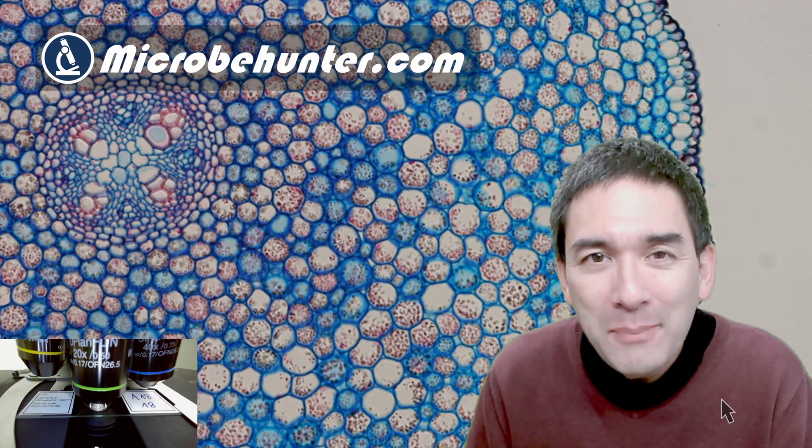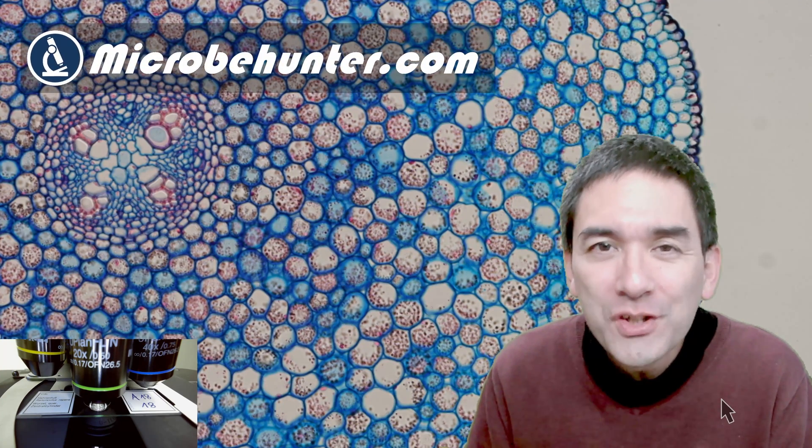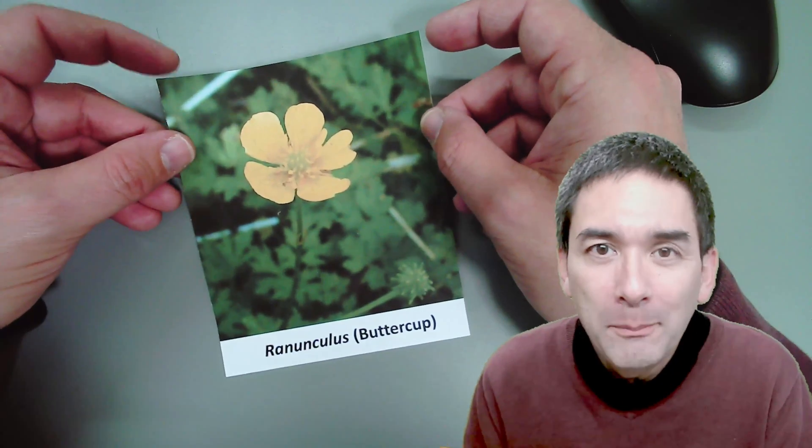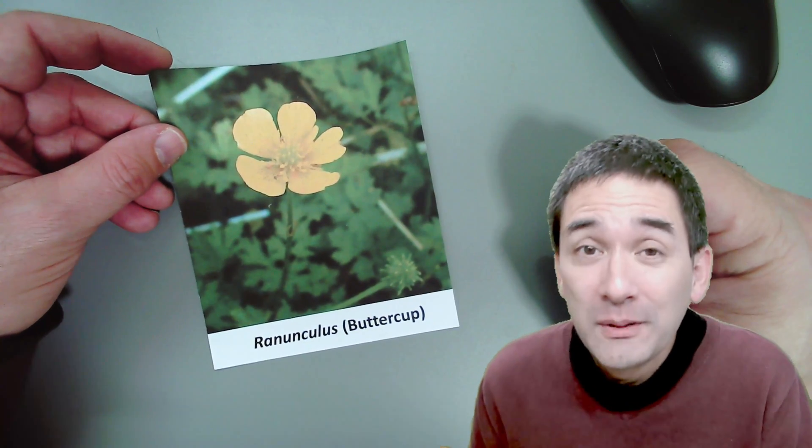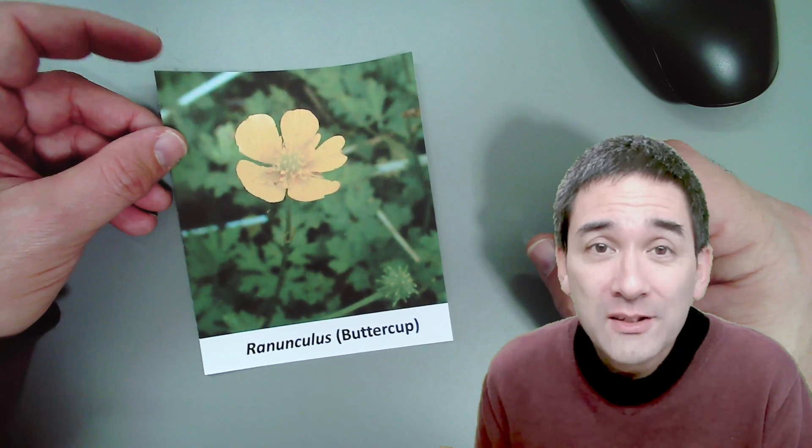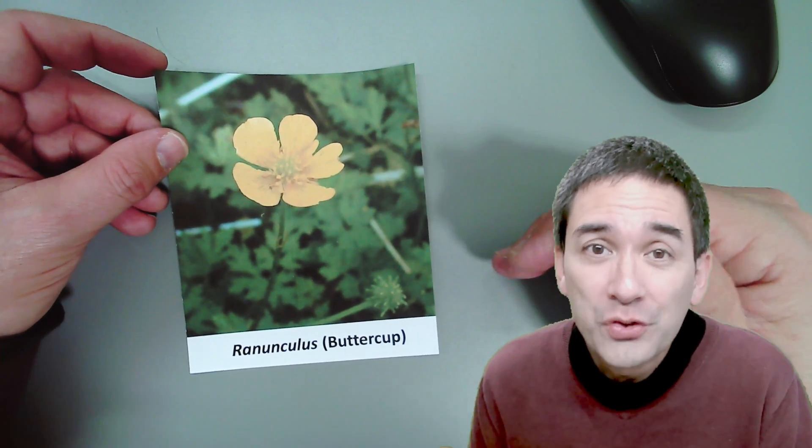What you see here in the background is the cross section of the root of a flowering plant. Which plant I'm talking about here, that's the one. It's called the Buttercup or also known as Ranunculus and it is a dicot and therefore it has a typical structure in the cross section of the root.